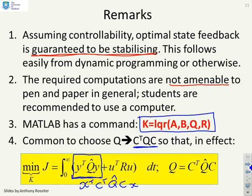So you can see we can get output in the performance index simply by writing Q as C transpose Q hat C.